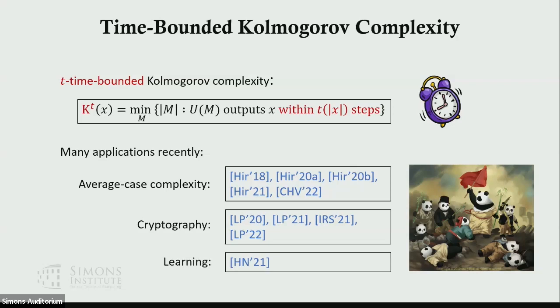In this talk, the time-bounded Kolmogorov complexity is denoted as K^t. I would just say kt to mean k superscript t. The reason I don't use k-poly is because in some applications mentioned later, t doesn't have to be polynomial. Recently there have been many exciting applications of time-bounded Kolmogorov complexity in average case complexity, cryptography, and learning.